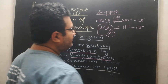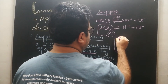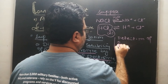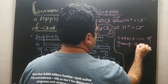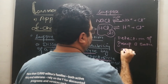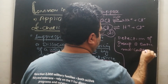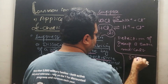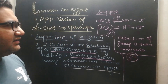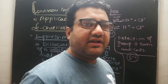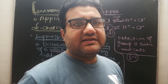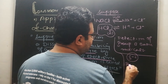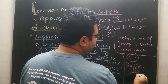Similarly, common ion effect may also be applied in the detection of Group 2 basic radicals, which are detected in the form of their sulfides. This point is required to be memorized for MCQs, and it will become clearer when you perform salt analysis in the lab. The last very important application of common ion effect is buffer solutions.